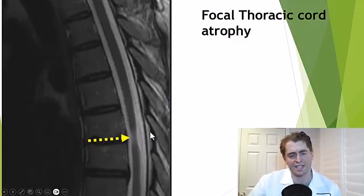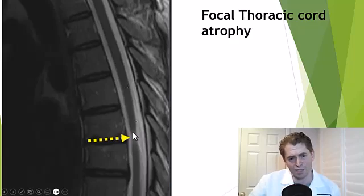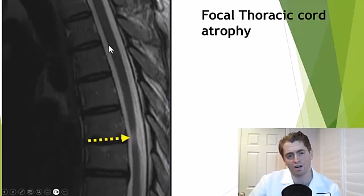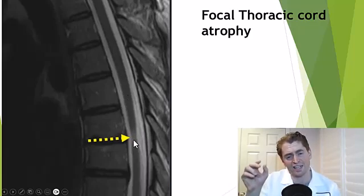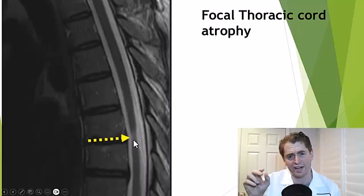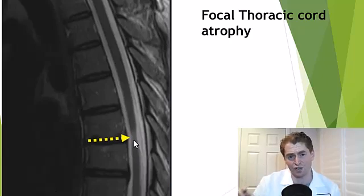This is an example of focal thoracic spinal cord atrophy. You can see higher up there's a normal caliber of the thoracic spinal cord, but at the area of this lesion it's clearly narrower, indicating permanent tissue injury.